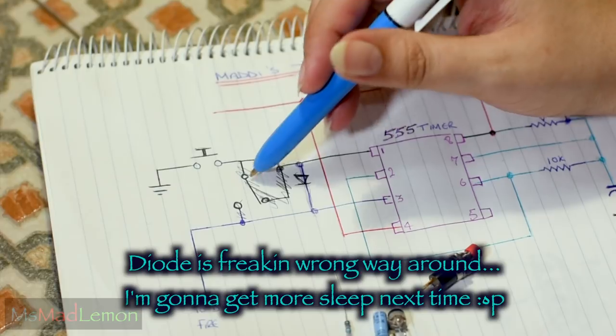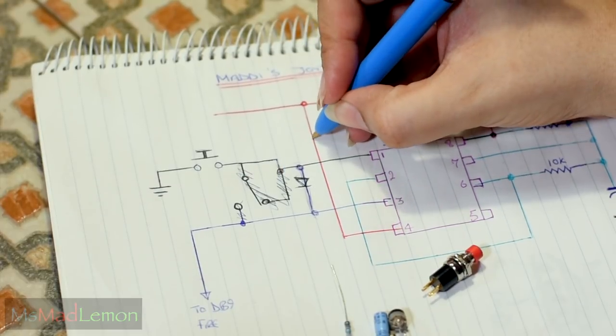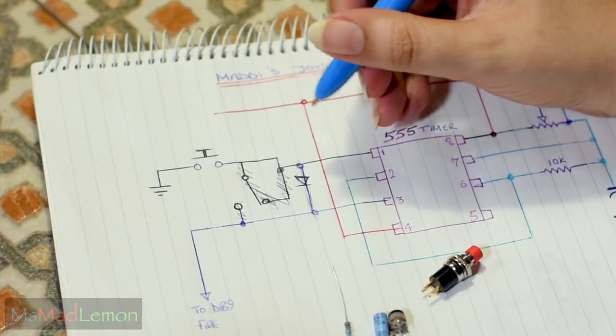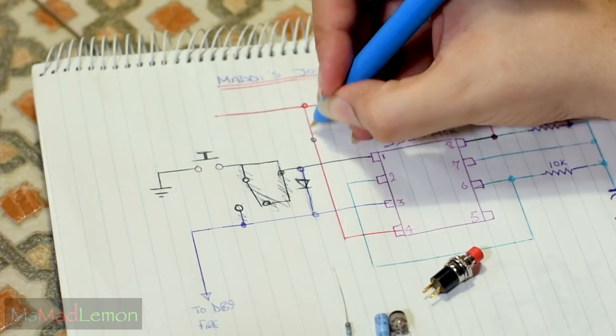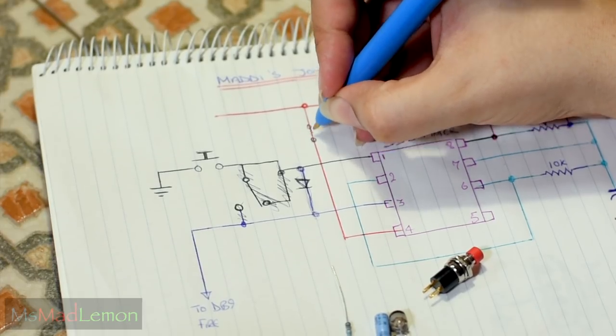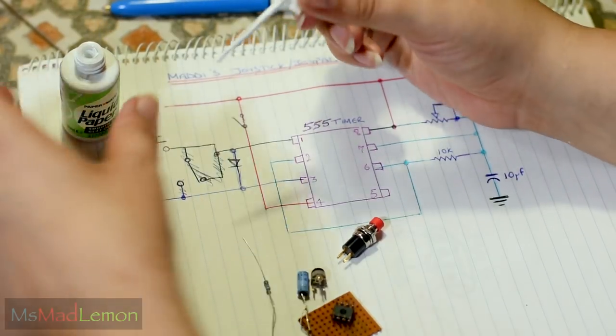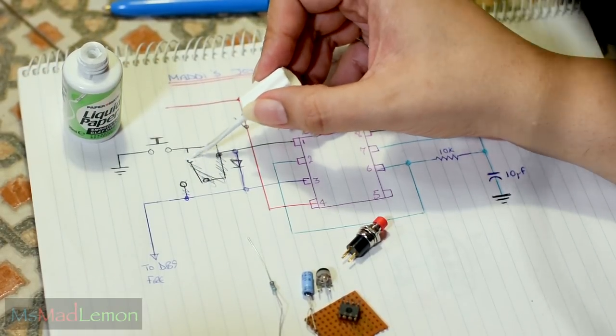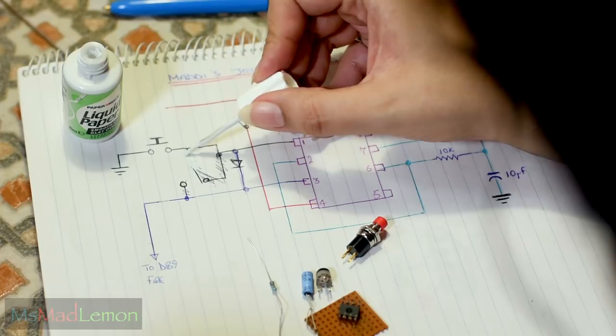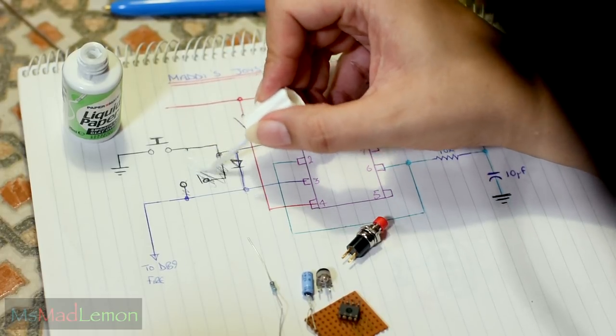Instead of the switch being here, we can just make a switch on here. We just have here, break that, make a switch here. Just to make it clear, I'll liquid paper this part out. I hate it when things are so scruffy. I like my circuits as neat as can be.